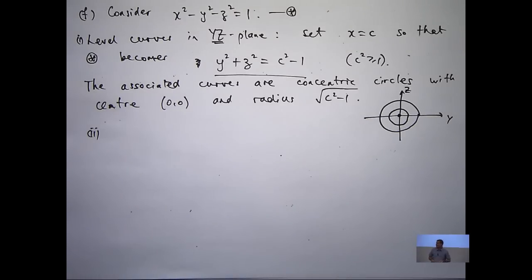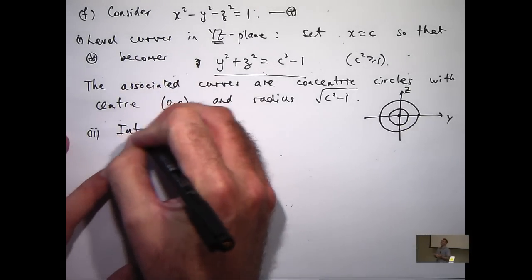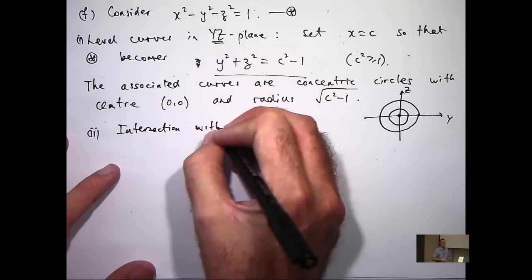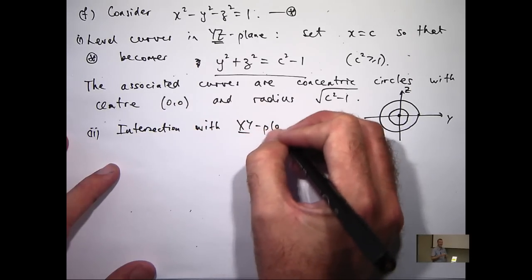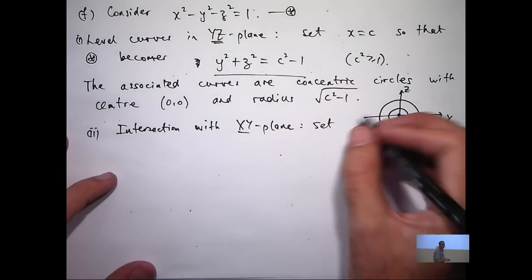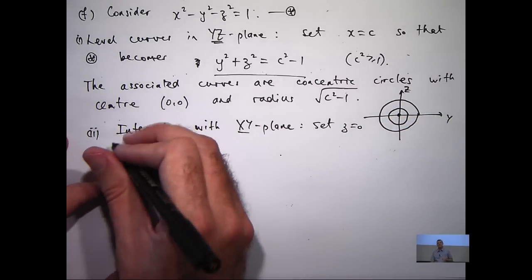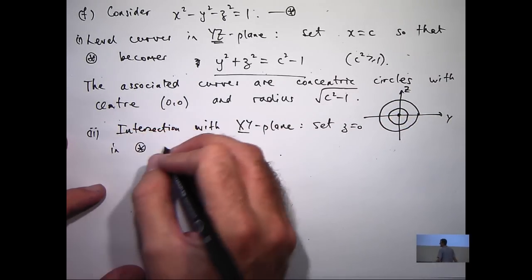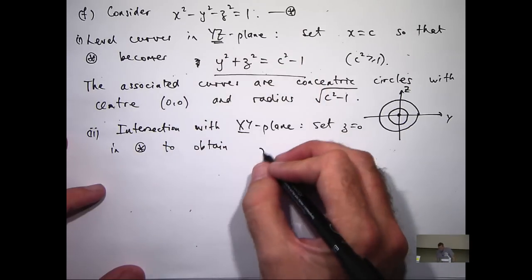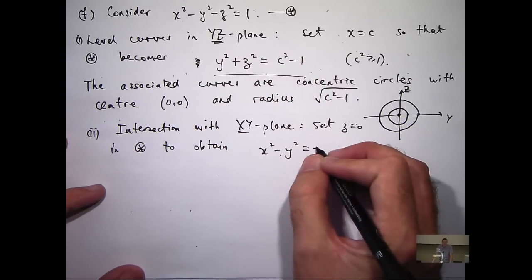Now, I'm going to intersect the surface with, again, not in this case a vertical plane, the x-y plane. So we set z equals 0. And our start equation will then become x squared minus y squared equals 1.